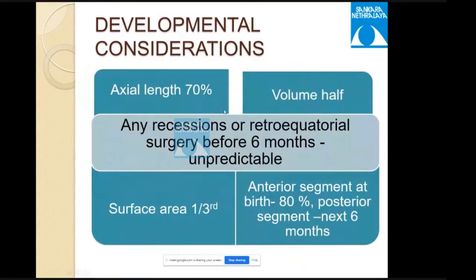Developmental considerations: in a child, the axial length is 70% of adult size, the volume is half, and the surface area is one third. The anterior segment at birth is 80% developed, and the posterior segment develops in the next six months. Therefore, recession or retro-equatorial surgeries before six months of age are unpredictable.